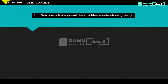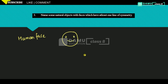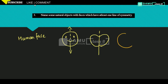Our third question is: name some natural objects with faces which have at least one line of symmetry. Let's take human faces — a human face will have one line of symmetry. Then, some fruits — let's take apple. An apple will also have one line of symmetry. Next, play balls — balls will also have one line of symmetry, or more than one line of symmetry.